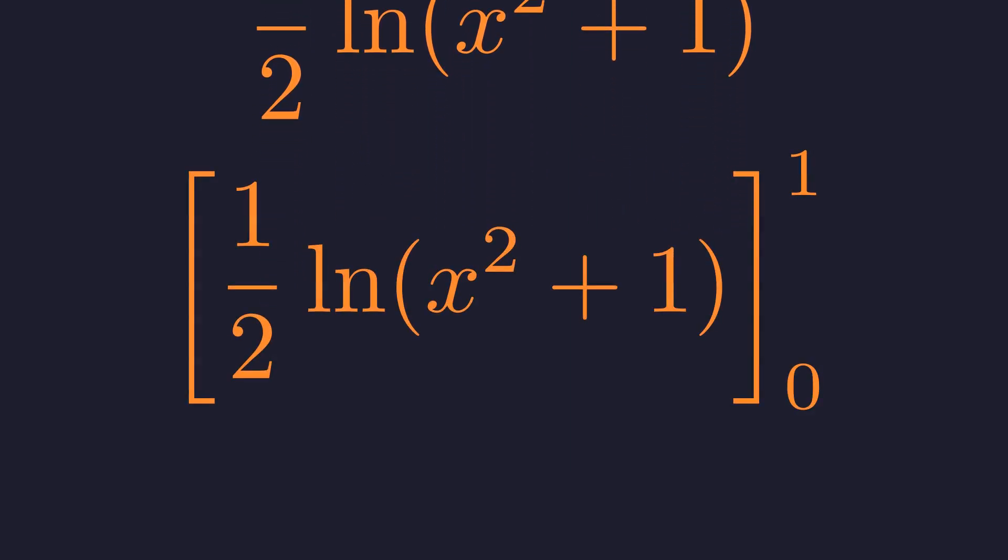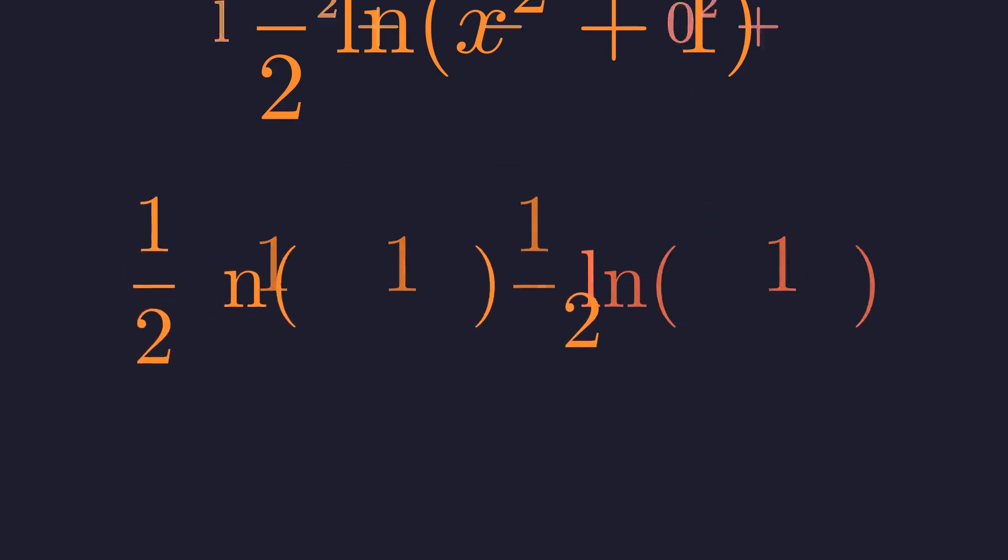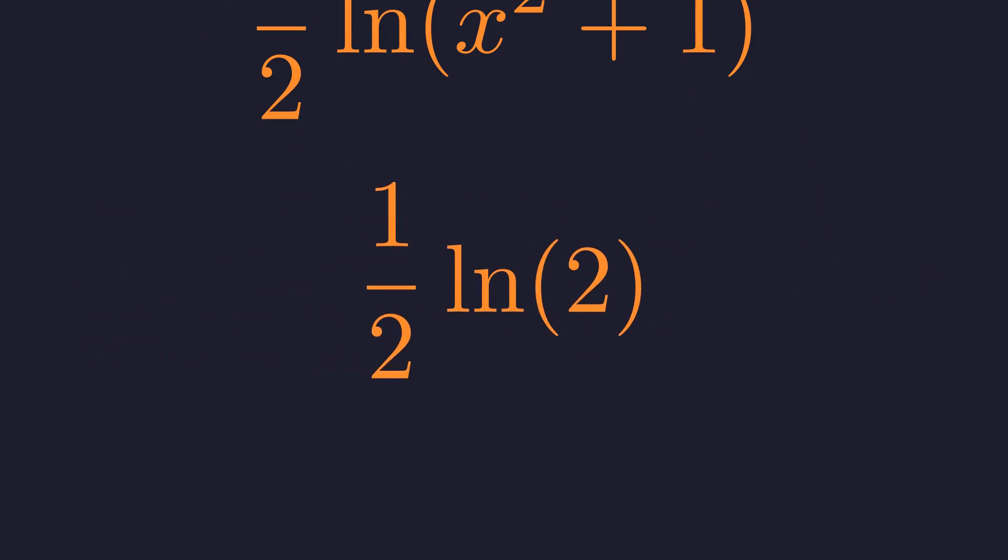Applying the bounds from 0 to 1: at 1 we get 1 half natural log of 2. At 0, 1 half natural log of 1. Natural log of 1 is 0, so that term vanishes, leaving us with 1 half natural log of 2.